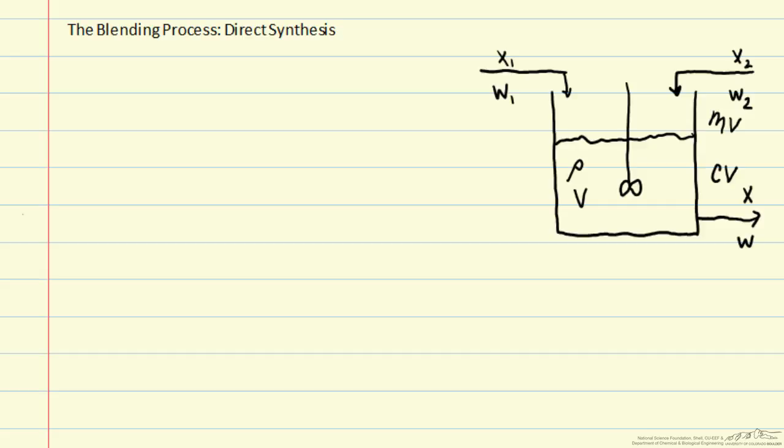So in the direct synthesis method, we will specify the closed-loop behavior that we would like to have, and then we will calculate the control law to give us that behavior.